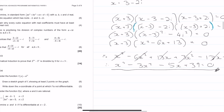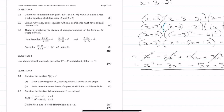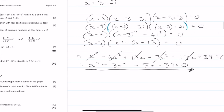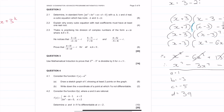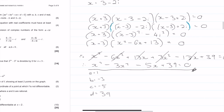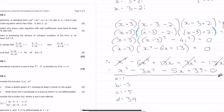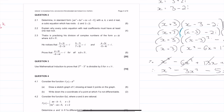Now I have it in standard form where a equals 1, b equals minus 3, c equals minus 5, and d equals 39. You don't really have to write that out but I just wanted to show you what they equal. That is the final solution and we get 8 marks for that.